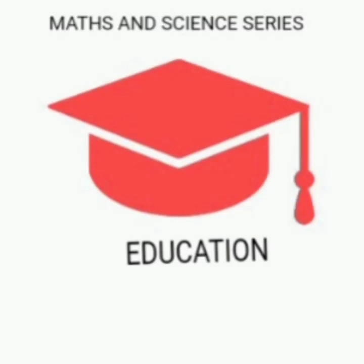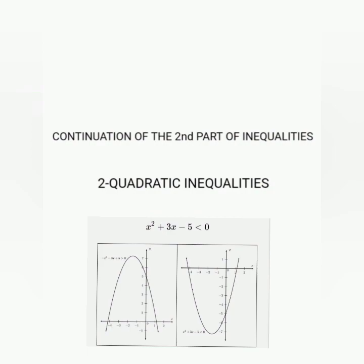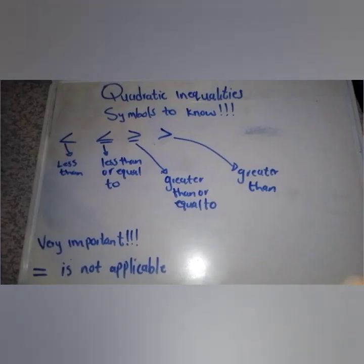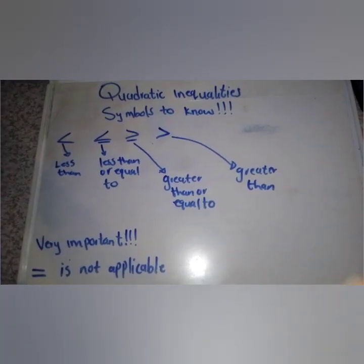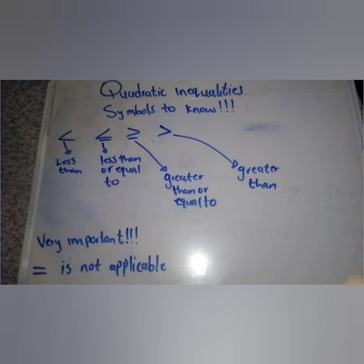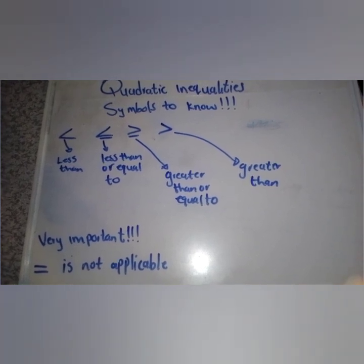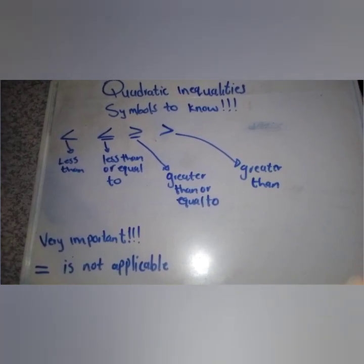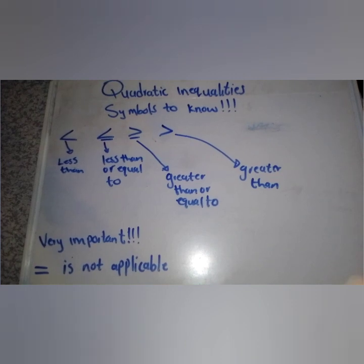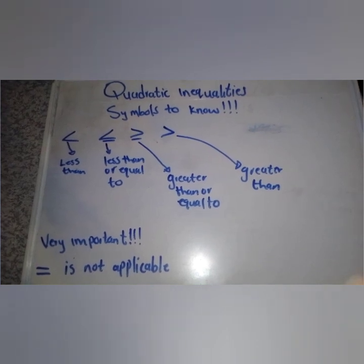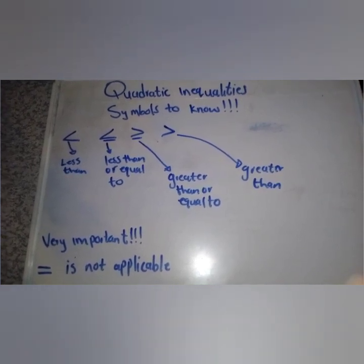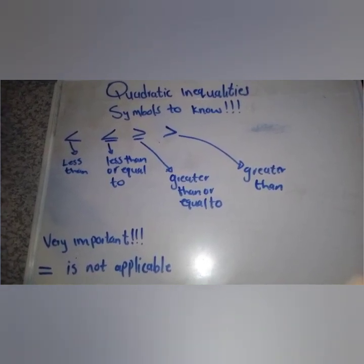Welcome to the Maths and Science series. This is the continuation of the second part of inequalities. These are the things you need to know — the symbols, as indicated. The very important thing to know about this topic is that an equal sign is not applicable; we do not use it.